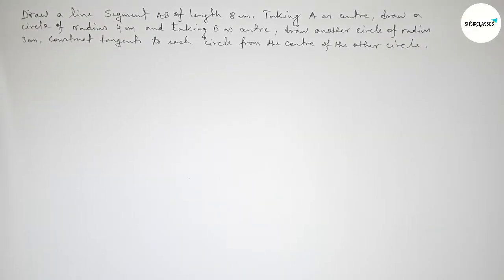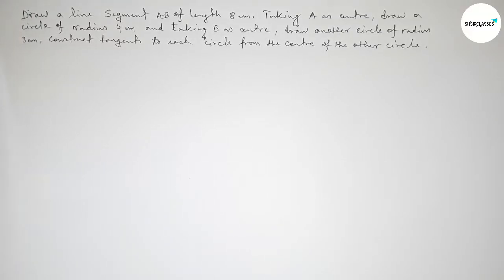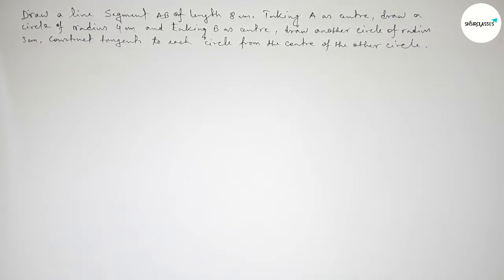Hi everyone, welcome to SSR Classes. Today we are discussing an important geometrical construction. First, draw a line segment AB of length 8 centimeters. Then, taking A as center, draw a circle of radius 4 centimeters. Taking B as center, draw a circle of radius 3 centimeters. We have to construct tangents to each circle from the center of the other circle. Let's start the video.